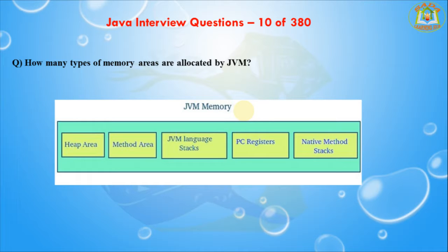The heap area is the runtime data area in which objects are allocated. The stack area — Java stack stores frames; it holds local variables, partial results, and plays a part in method invocation and return. Each thread has a private JVM stack created at the same time as the thread. A new frame is created each time a method is invoked, and a frame is destroyed when the method invocation completes.